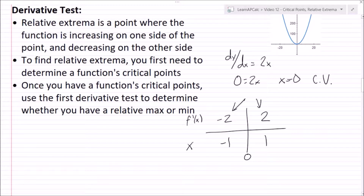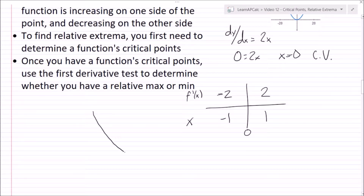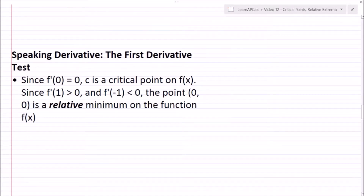Since these two values have different signs, x equals zero is a relative extrema. If they had the same sign, it would not be a relative extrema — the function would be either decreasing on both sides or increasing on both sides. Here it's decreasing on the left and increasing on the right, so this is a relative min. A relative max would be increasing on the left and decreasing on the right.